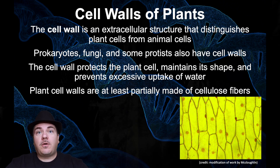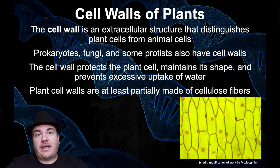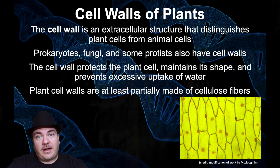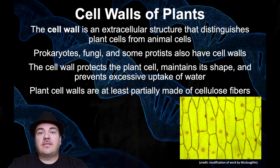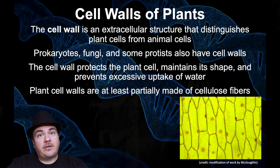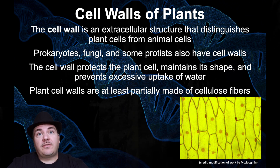The plant cell wall is an extracellular structure that is one of the things that distinguishes a plant cell from an animal cell. Plants have cell walls; animal cells do not. But plants are not the only things that have cell walls. Prokaryotes and bacteria can have cell walls. Fungus, which is not a plant, can have cell walls. Some protists have cell walls. But animals do not have cell walls.